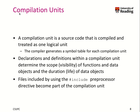A key definition used throughout this lecture is the compilation unit: source code that is compiled and treated as one logical unit. The compiler generates one symbol table per compilation unit. When you create declarations and definitions within a compilation unit, you determine the scope — the visibility of functions and data objects — and also the duration, which is the lifetime of data objects. Any file included with the preprocessor's include directive becomes part of the compilation unit, which is created after the preprocessor has finished its pass and all hash directives have been removed.